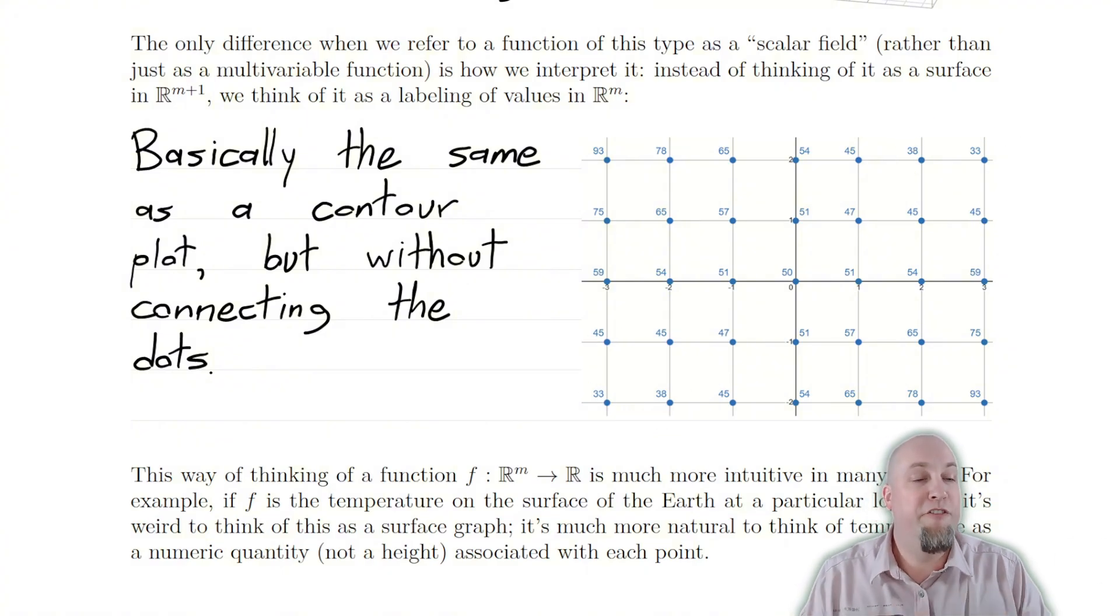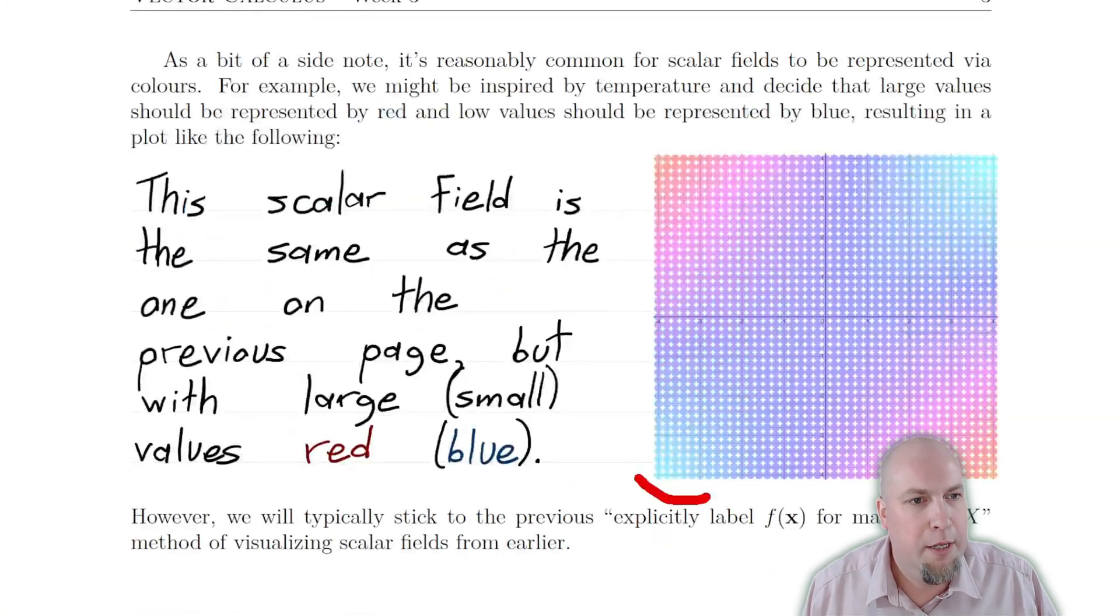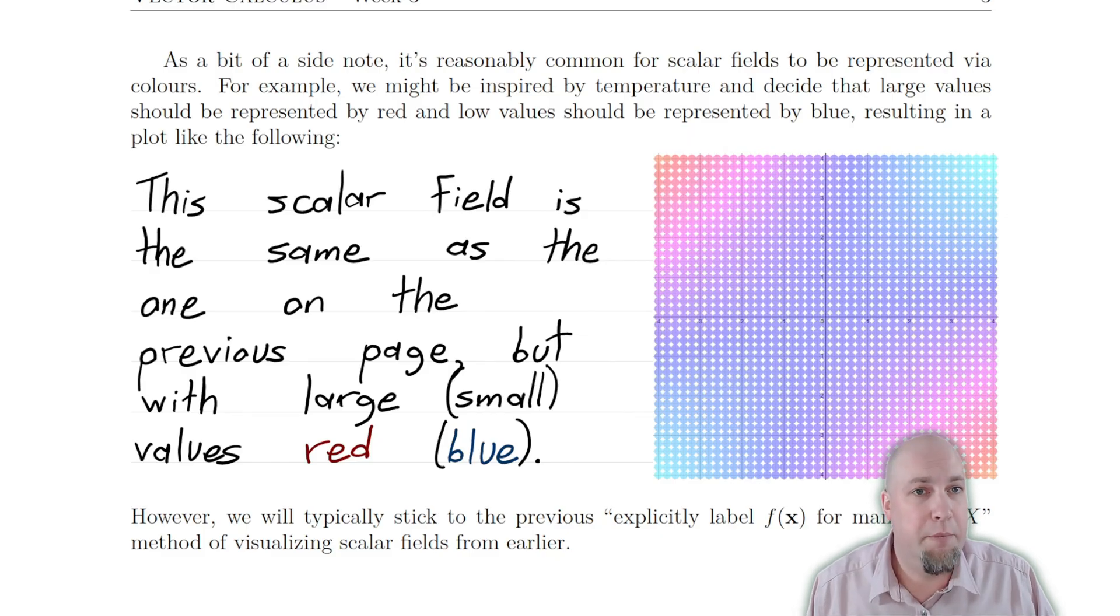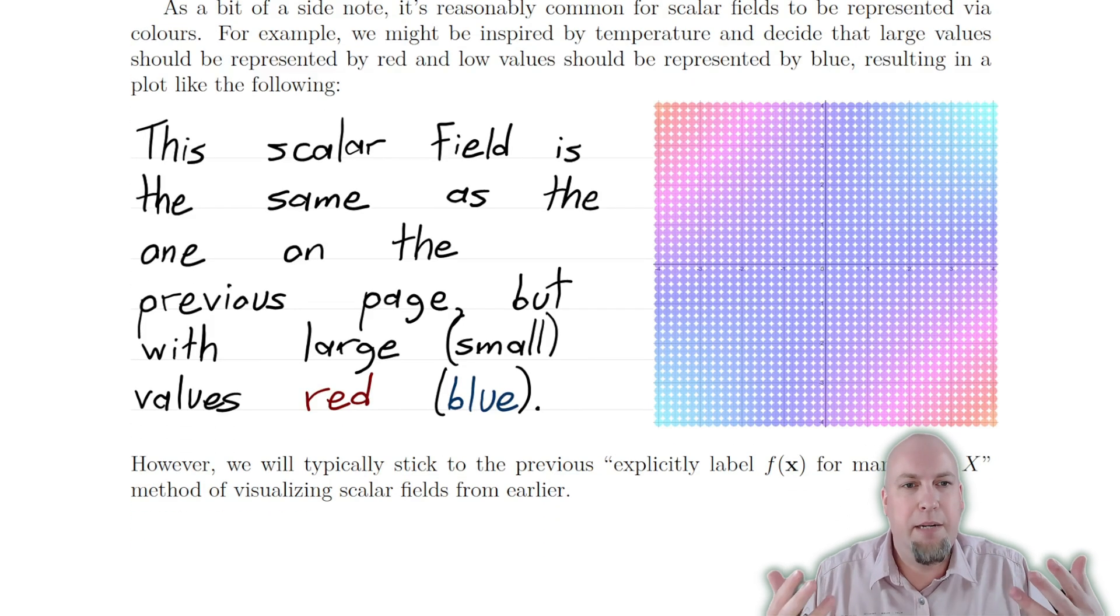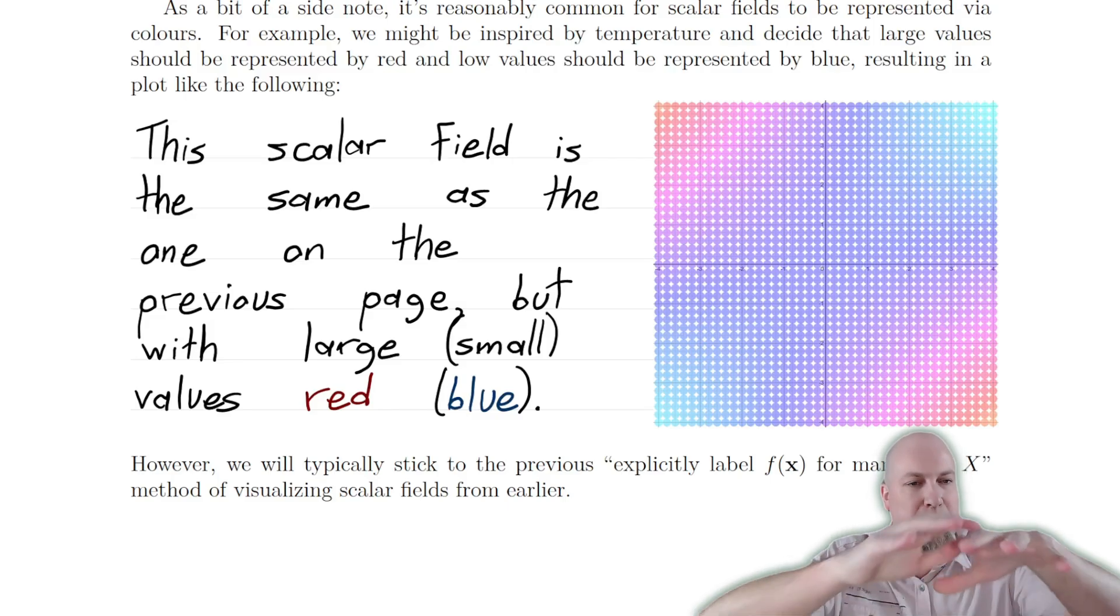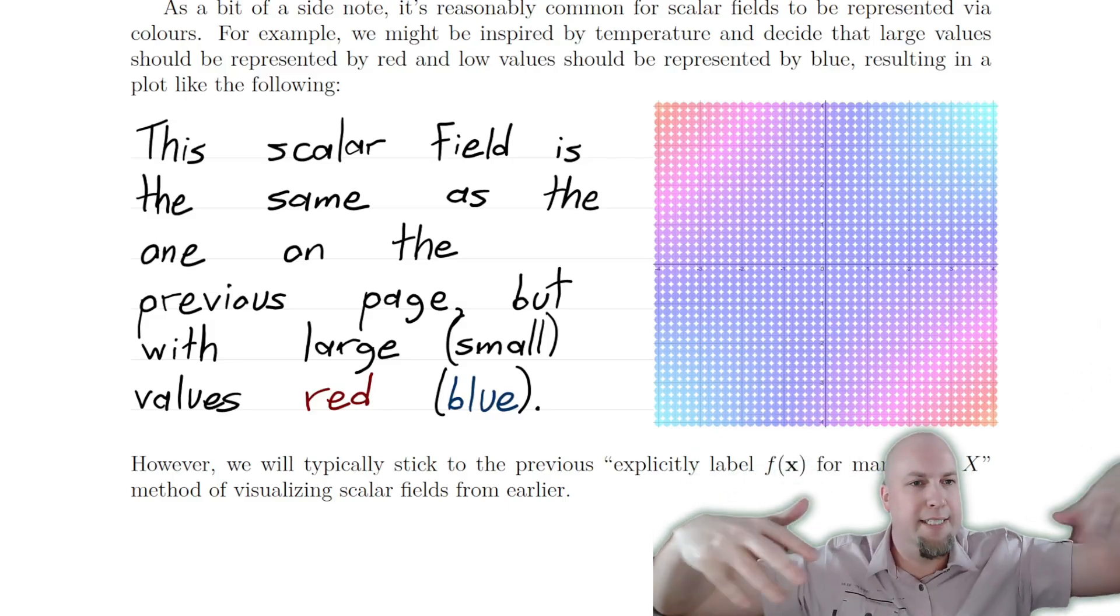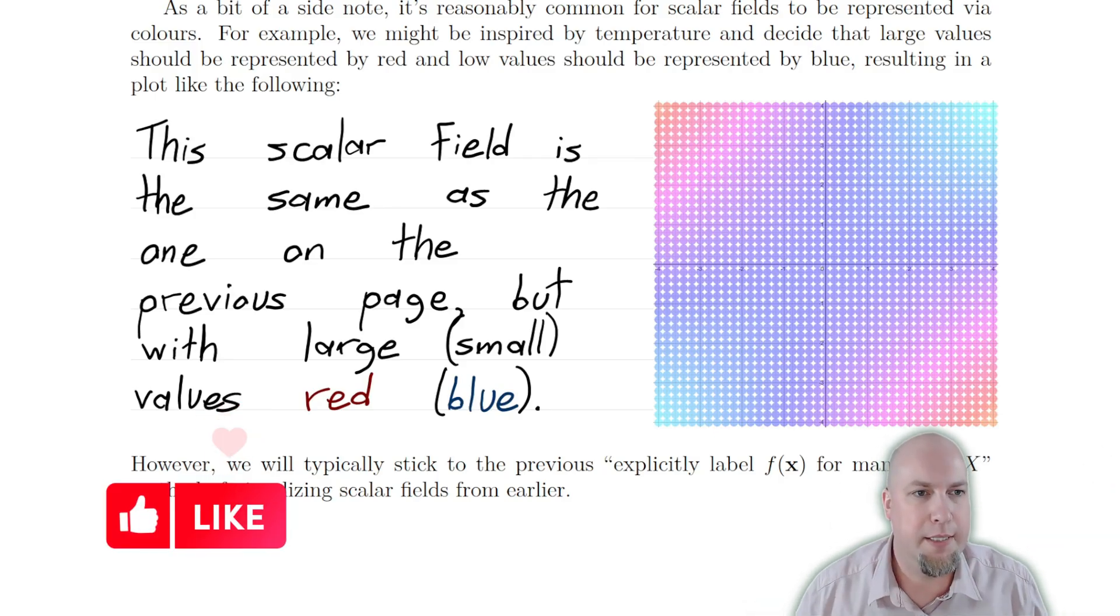So we could imagine maybe this scalar field, this function, represents temperature or something like that. If you were trying to represent the temperature on a surface, this would be a very standard way of doing it. If these are degrees Fahrenheit, then at the top right and the bottom left of the surface, it's very cold, so I'm representing it via blue. But then at the bottom right and the top left, oh, it's very hot, so I'm using red at those points. And this is a time when you probably wouldn't use a surface because we don't usually think of temperature as height. It's more normal to just label the values or use colors like this.